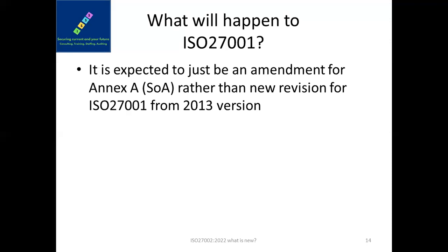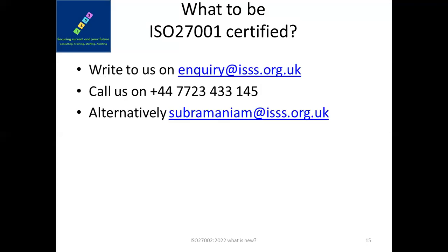ISO 27001 is not expected to undergo revision because the remaining part of the standard is largely the same — it's the statement of applicability that requires major change due to the updated controls. If you want to be ISO 27001 certified, write to us at i2s.org.uk or call us on +44 7723 433 1145. Alternatively, you can email subramaniam@i2s.org.uk. Stay connected, subscribe to the channel for further videos on CISSP, security governance, or penetration testing.